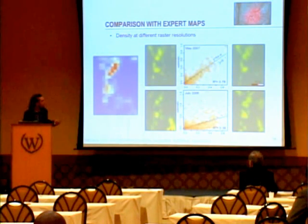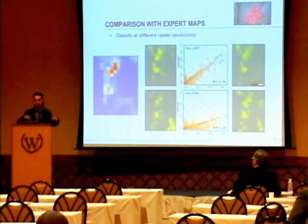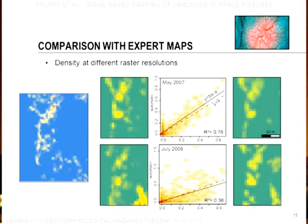Another criteria we try to evaluate is the fissure density, which is the length of the mapped crack per unit, per aerial unit. And we calculated this for different raster sizes. And again, here, well, the best results we got for that, a very good correlation between the manual mapping and, sorry, the automatic detection and the manual mapping.